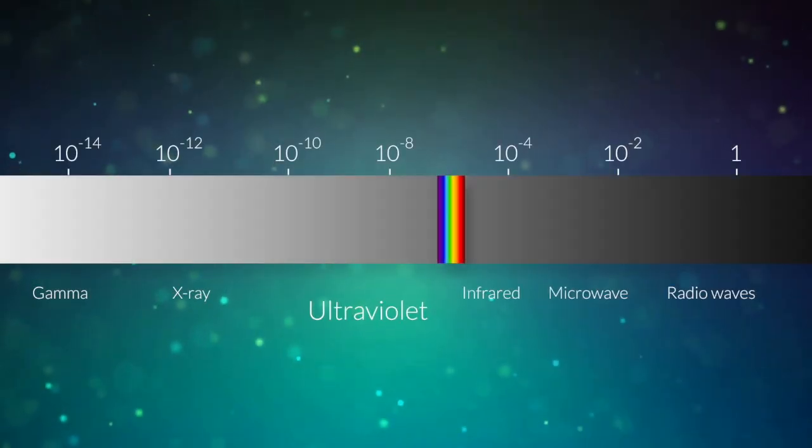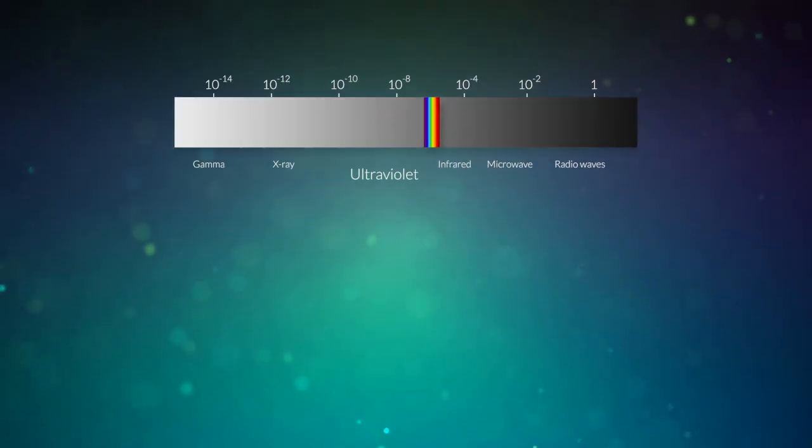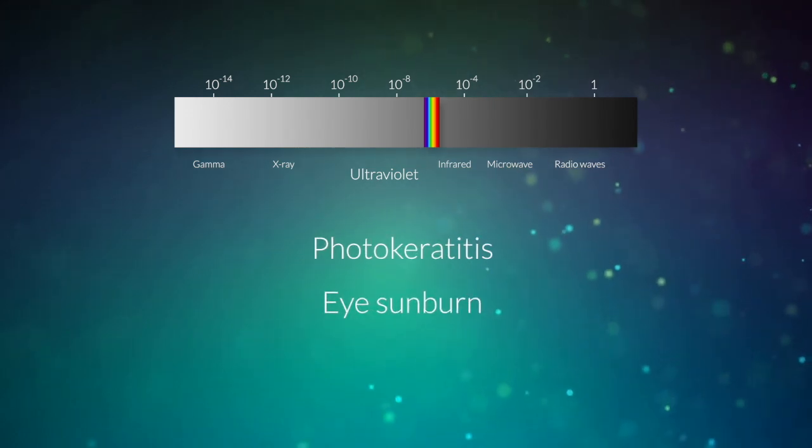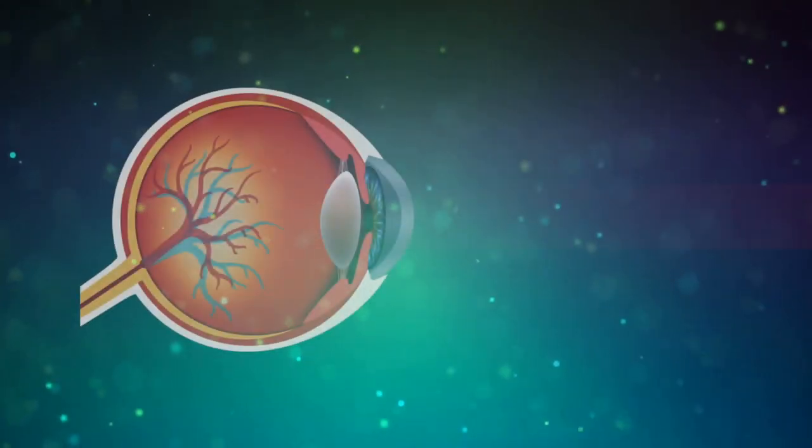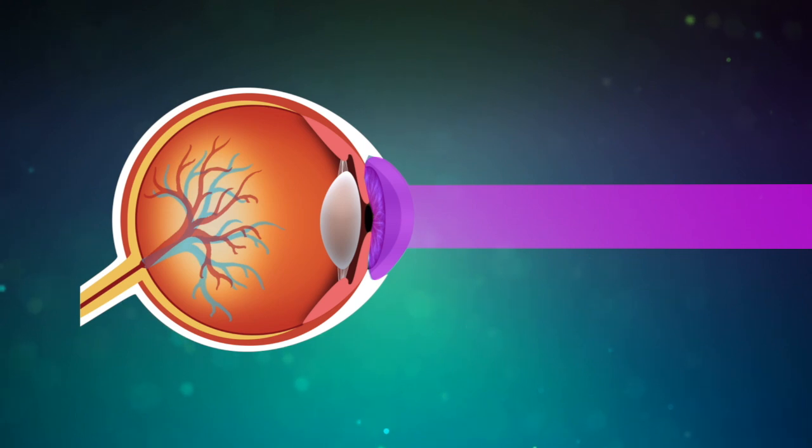Exposure to radiation in the far ultraviolet spectral region can cause photokeratitis, or sunburn of the eye, when in the wavelength region spanning approximately 180 to 315 nm. This can affect the cornea at the front of the eye but also the skin.